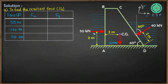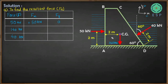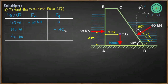The 50 kN force gives a positive x-component of +50 kN and zero y-component. The 140 kN weight acts downward, so its y-component is −140 kN and its x-component is 0 kN.